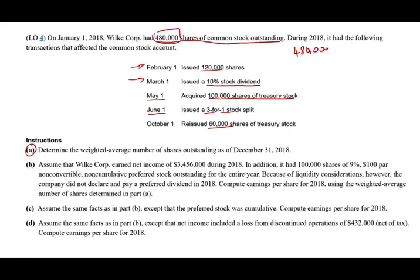Those 480,000 shares were outstanding until February 1st, when you issued 120,000 shares — now you have 600,000 shares. From January 1st until February 1st, you had 480,000. Starting February 1st, you had 600,000 shares, and you had those until March 1st, where you issued a 10% stock dividend. That means 10% of 600,000, which is plus 60,000, so now you have 660,000 shares.